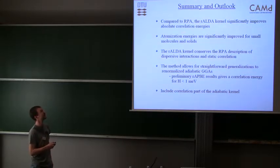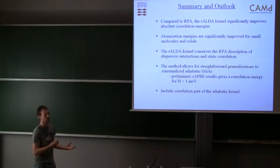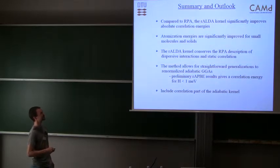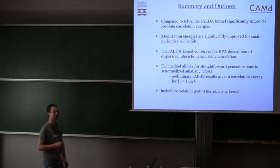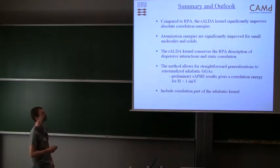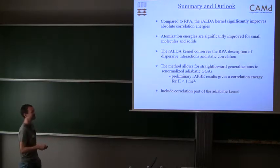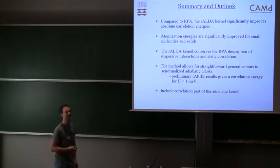To conclude: this new kernel tends to significantly improve correlation energy, absolute correlation energy. It also improves atomization energies for small molecules and solids. We conserve the RPA description of dispersive interactions and static correlation. It also allows for straightforward generalization to GGAs. We can do the exact same thing with PBE, RPBE, or meta-GGAs if you would like. Some very preliminary results show that doing this with PBE, we actually get correlation energy for hydrogen atom which is less than a millielectron volt. We are very happy about this result because this should really be the fundamental thing that we can get this number close to zero. Finally, we can also improve the correlation part of the adiabatic kernel, and that will give more accurate results.